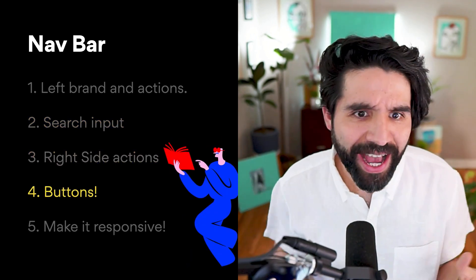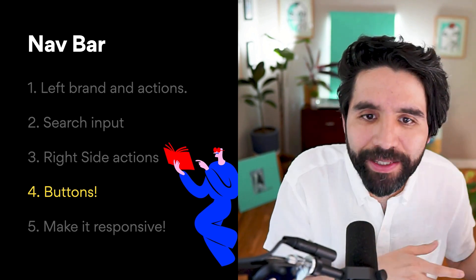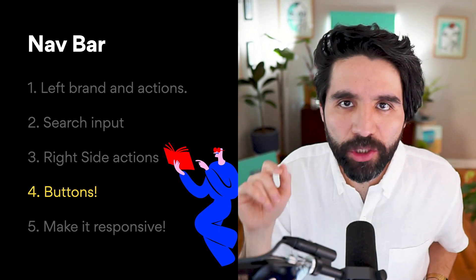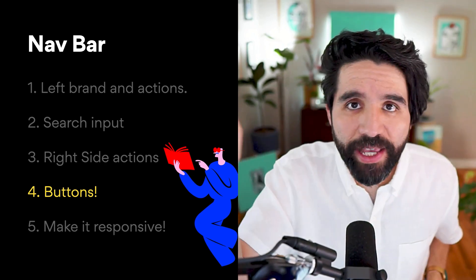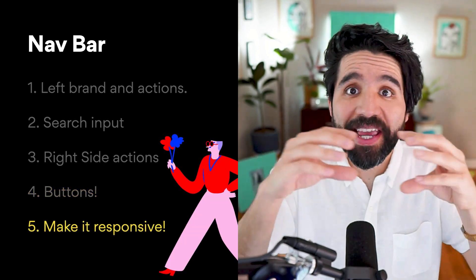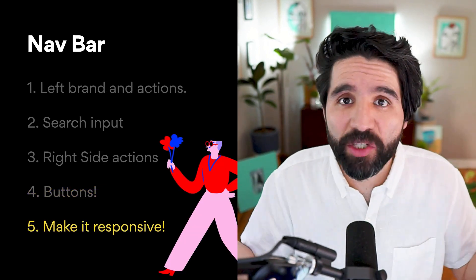The right side has an avatar, a button, and a link — so more auto layout to add. Then we'll put it all together in a way that can adapt to any desktop screen size, and that's it. Let's do it.